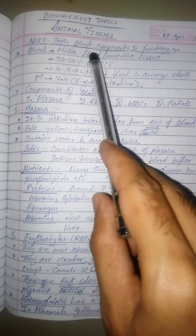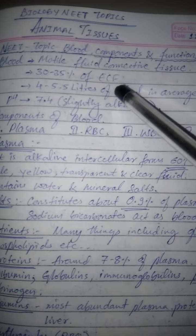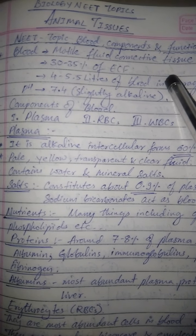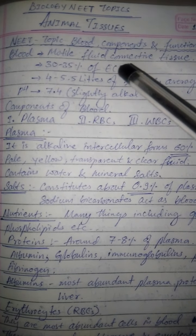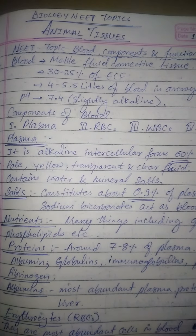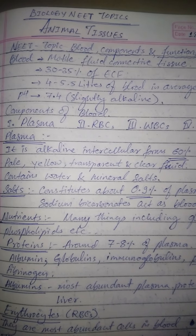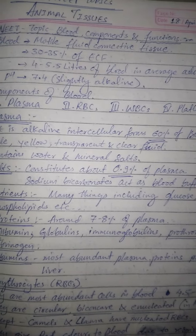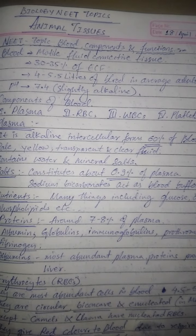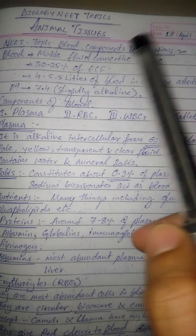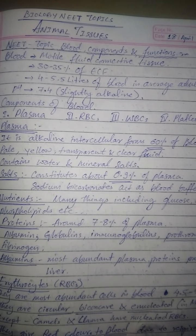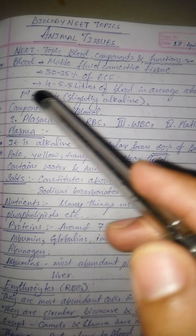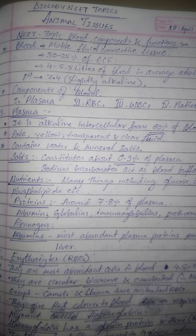In animal tissues, today's topic is blood, its components and functions. Blood is a motile fluid connective tissue. Along with lymph, blood is the only tissue which can be motile, meaning it circulates in the body. Around 30 to 35 percent of the extracellular fluid forms blood. The amount of blood in a normal adult is around 4 to 5.5 liters, and during pregnancy it may increase to around 6 to 6.5 liters. The pH of blood is slightly alkaline, at around 7.4.